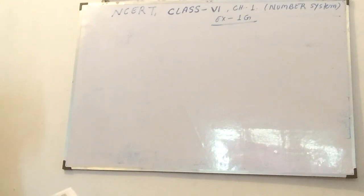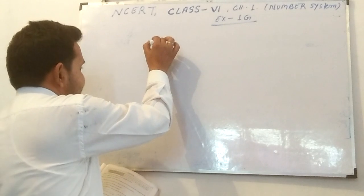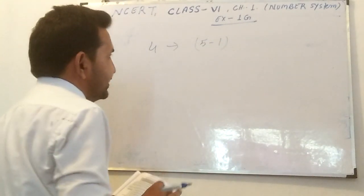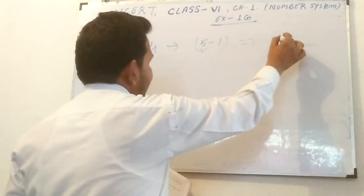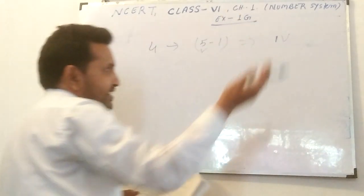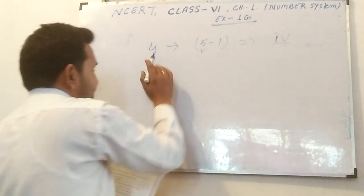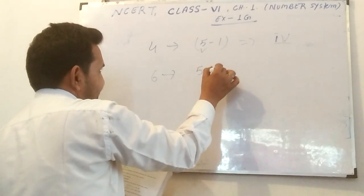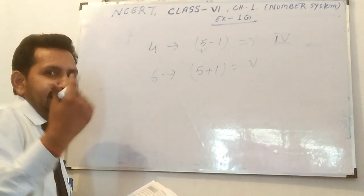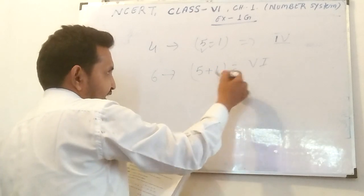Another property: if a smaller numeral is written to the right of a larger numeral, that means addition. If written to the left, that means subtraction. For example, if we want to write 4, that means five minus one. In Roman numerals, we write I to the left of V, so IV means subtraction — five minus one equals 4. But if we want to write 6, that means five plus one. We write I to the right of V, so VI means addition — five plus one equals 6. So right-side placement means addition, and left-side placement means subtraction.